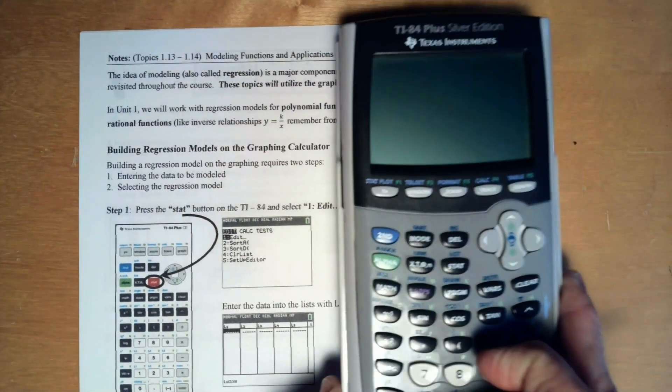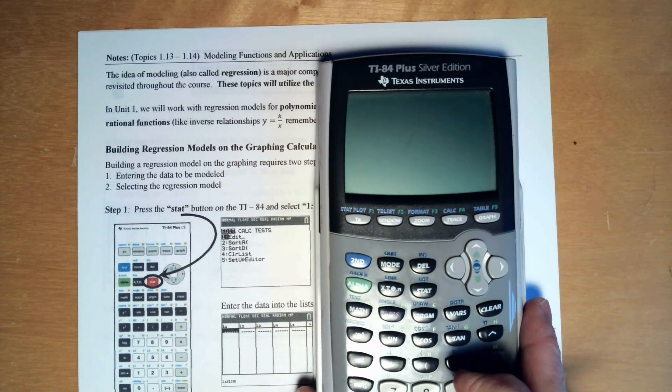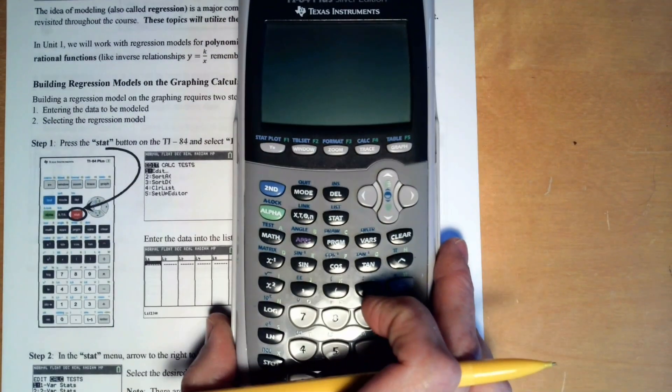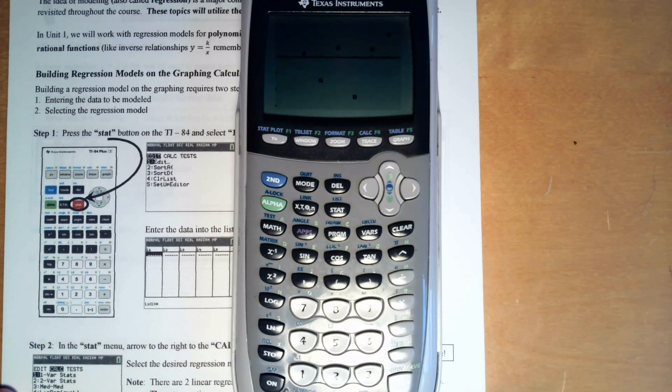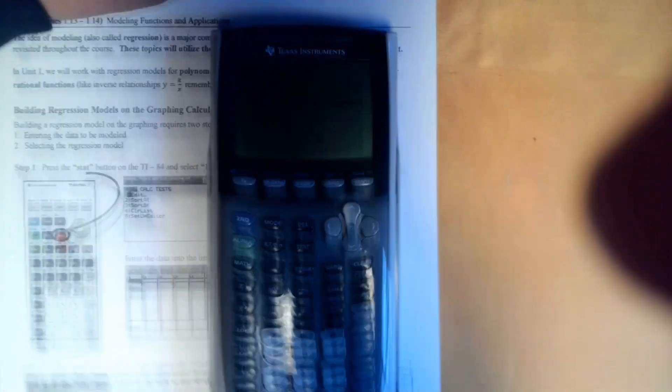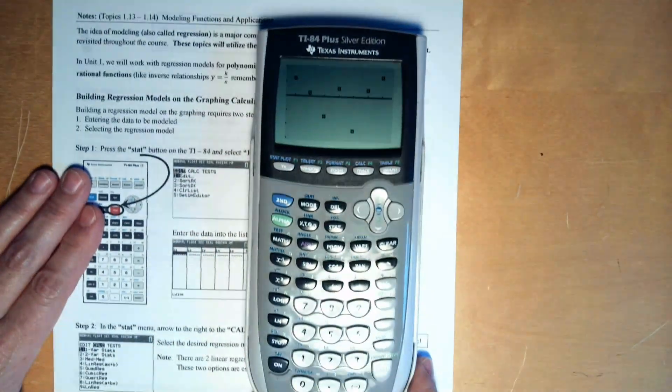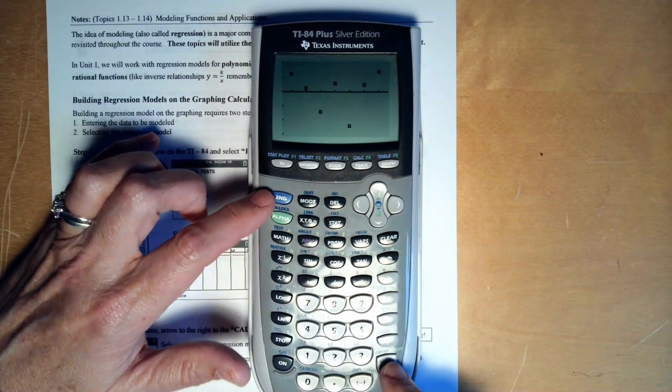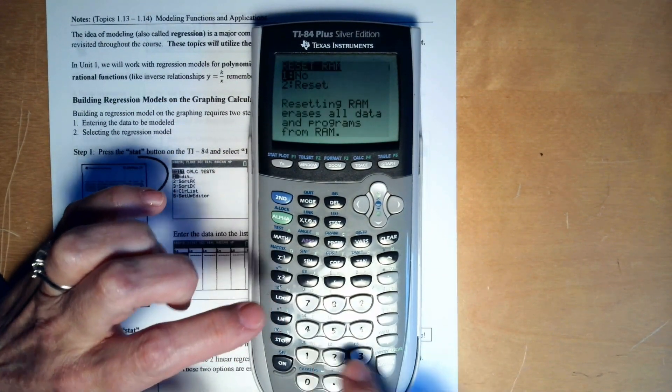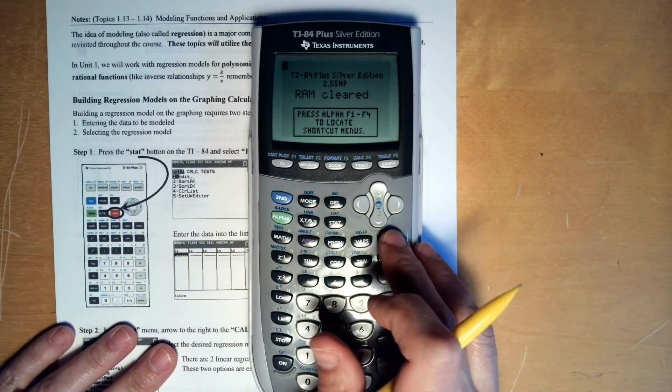So you are going to have data that you have to put into your calculator. The first thing you should probably do is clear your calculator. So when you want to do that, you've got to press second plus and then 712, so that you can have everything cleared.